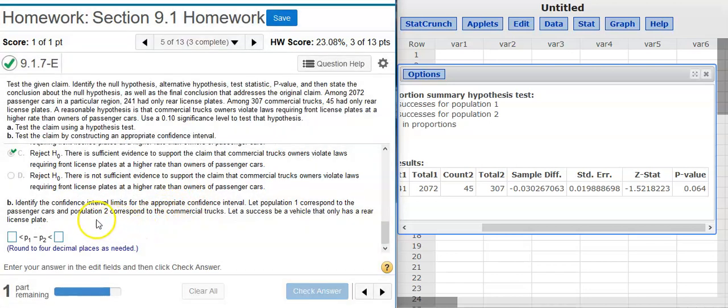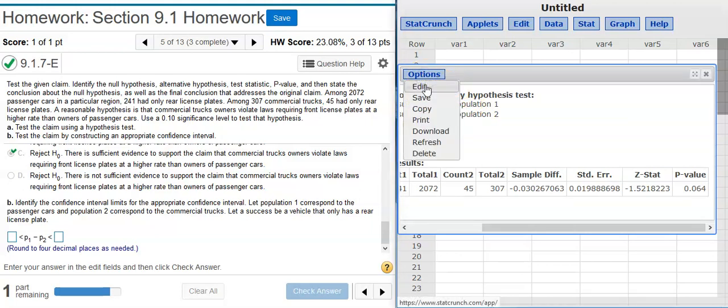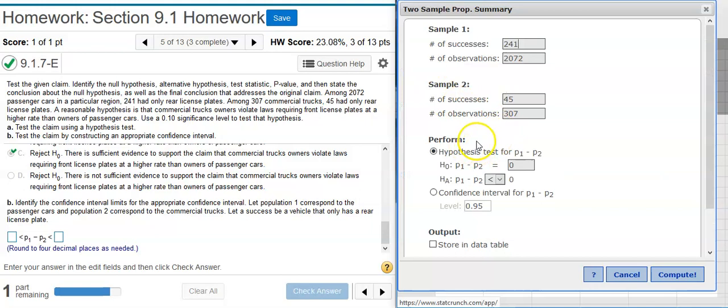Now, Part B asks for a confidence interval from the same data. So, I could go back through all those motions again, but I'm lazy. So, I'm going to come back up here, click on Options, Edit, and then, down here, I'm going to switch this radio button to Confidence Interval, and they don't specify a confidence level, so we have to determine the appropriate one. If we've got a 10% significance level, that means alpha is 10%, but we've got two samples, so I've got to subtract 2 alpha, and that's going to give me 80% confidence level.